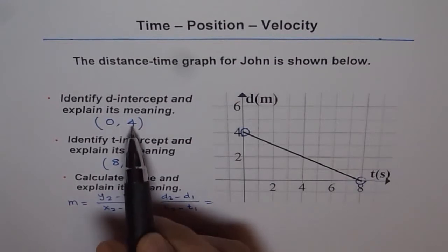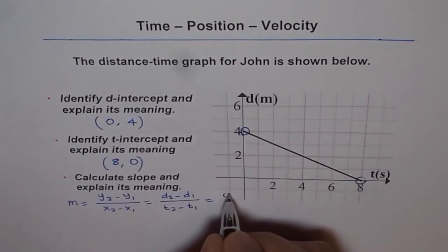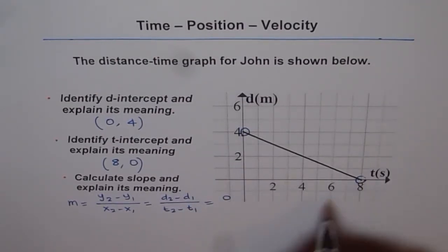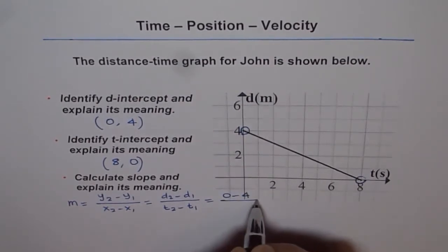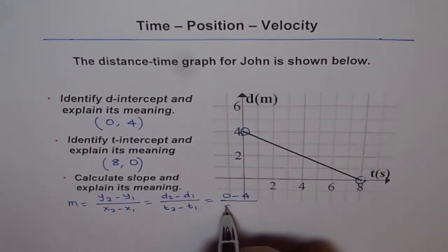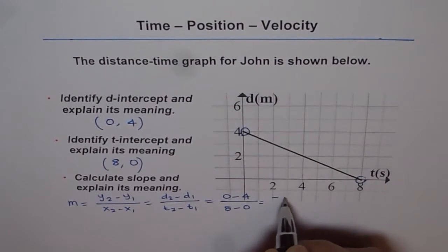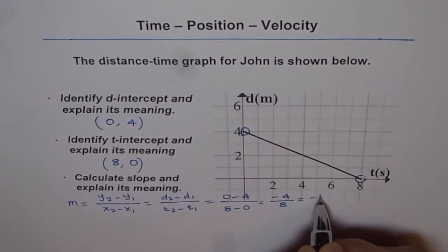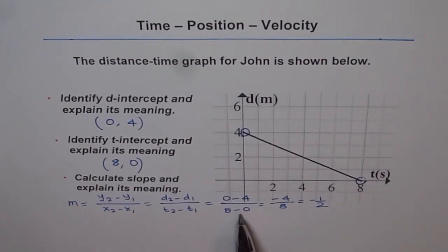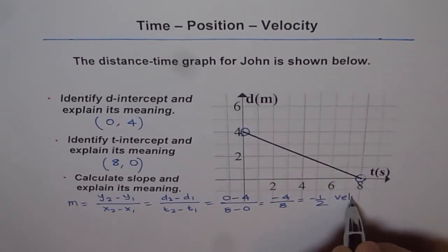Change in distance is 0 minus 4 — the distance goes from 4 to 0. Change in time is 8 minus 0, since final time is 8 seconds and initial time is 0. So that gives us −4 over 8, or minus one-half. In a distance-time graph, the ratio of change in distance to change in time is called velocity, so this slope signifies velocity.